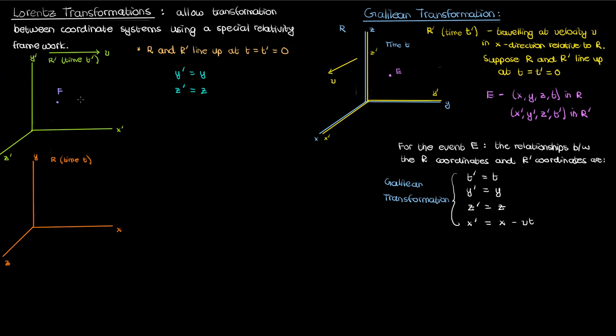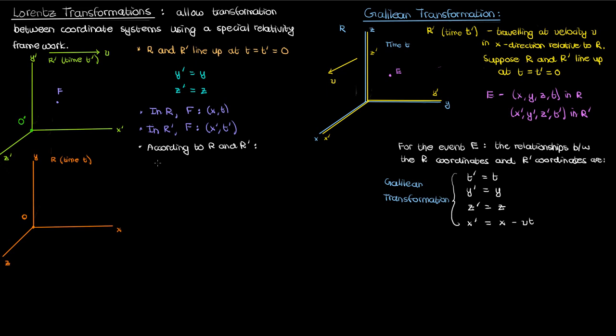Suppose there's some event f that occurs at some random time after time 0, so after we've lined up our two reference frames r and r'. The spacetime coordinates of f in r are x, t, while those in r' are x', t'. Note that I'm ignoring the y and z coordinates because they're equal in both reference frames. Let's suppose that the origin of r is o and the origin of r' is o'. Let's create a couple of vector equations using these three points o, o', and f. According to both reference frames, we can write the vector of equals o o' plus o'f. I'll call this equation 1.